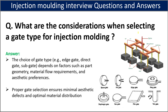The next question is: what are the considerations when selecting a gate type for injection molding? There are many gate types including sprue gate, pin gate, edge gate, ring gate, tab gate, film gate, fan gate, and diaphragm gate. The choice of gate depends on factors like part geometry, material flow, and aesthetic preferences. Proper gate selection ensures minimum aesthetic defects and optimized material distribution.